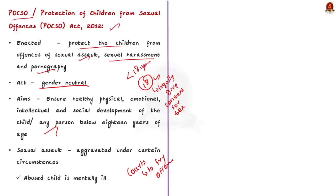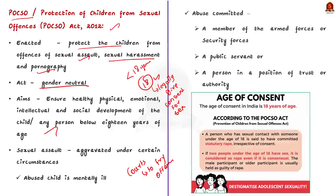The Act further deems sexual assault to be aggravated under certain circumstances — for example, if the abused child is mentally ill, or when the abuse is committed by a member of armed forces or security forces, a public servant, or a person in a position of power, then the sexual assault is deemed to be aggravated.